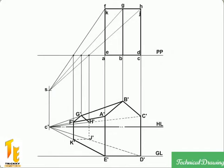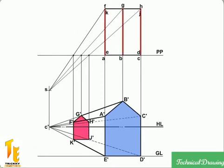The given figure shows the perspective view of a hut having its front face in the picture plane. The front face is seen in its true size and shape, while the back parallel face is of the same shape but reduced in size.